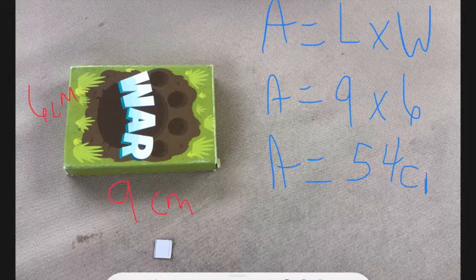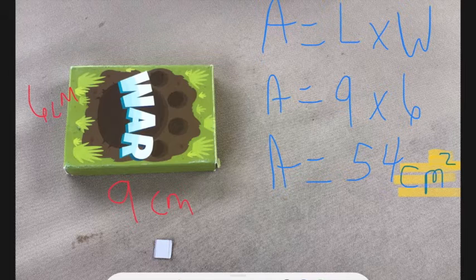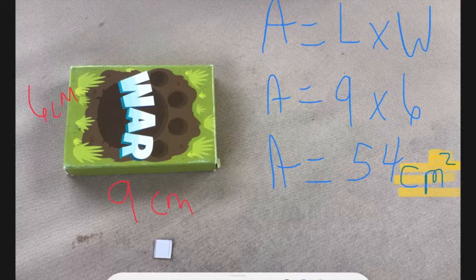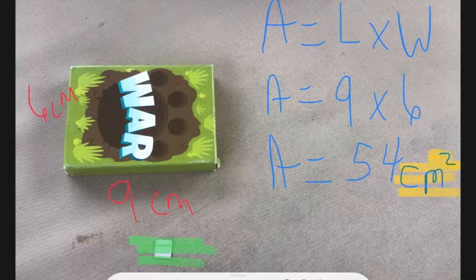...54 centimeters squared. This is really important — if it was centimeters it would be perimeter, but it's centimeters squared. 54 of these square centimeters fit over top of this deck of cards, and that's what I figured out for the area. That's how you figure out the basic area in centimeters squared for a rectangle.